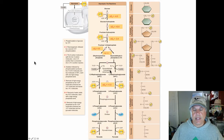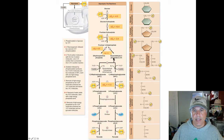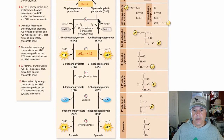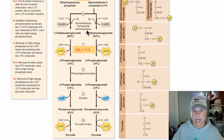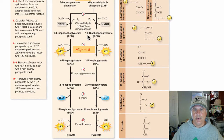We've covered the first two phases of glycolysis. Now let's enter the energy-yielding phase of glycolysis, in which two molecules of glyceraldehyde 3-phosphate go through this last phase. We show one on the right and one on the left — the left is identical to the right. The first step is the conversion of glyceraldehyde 3-phosphate to 1,3-bisphosphoglycerate.